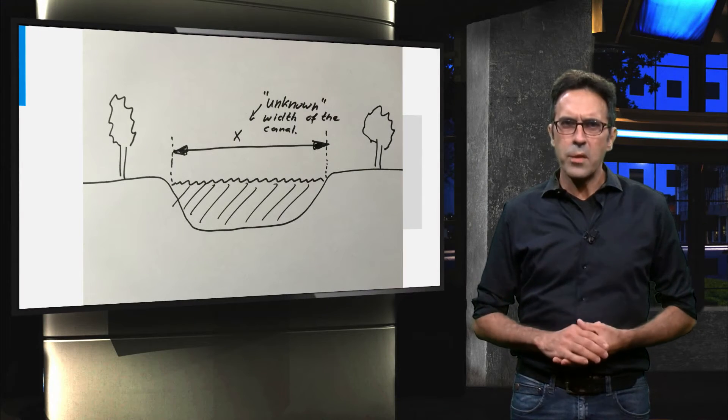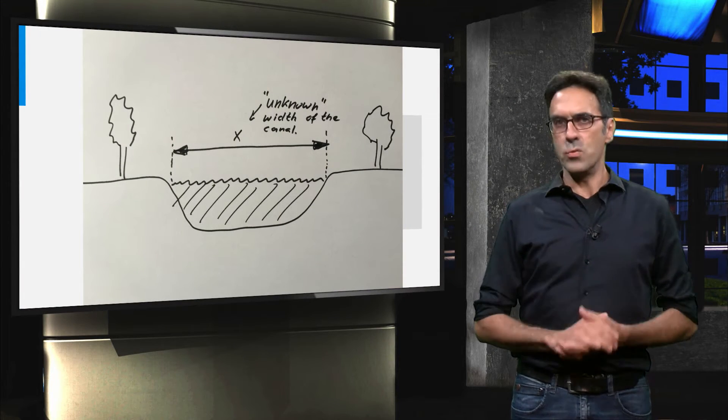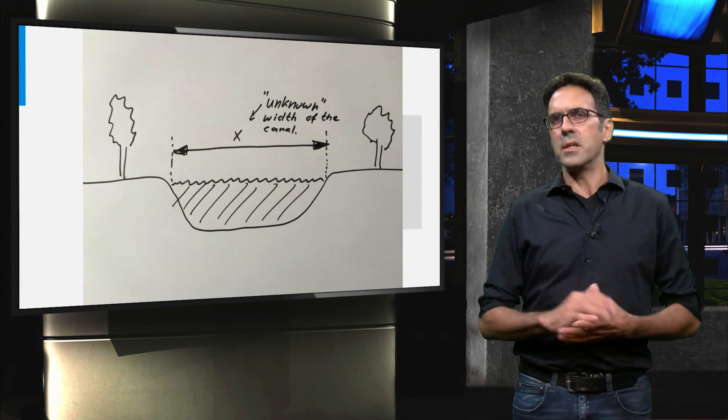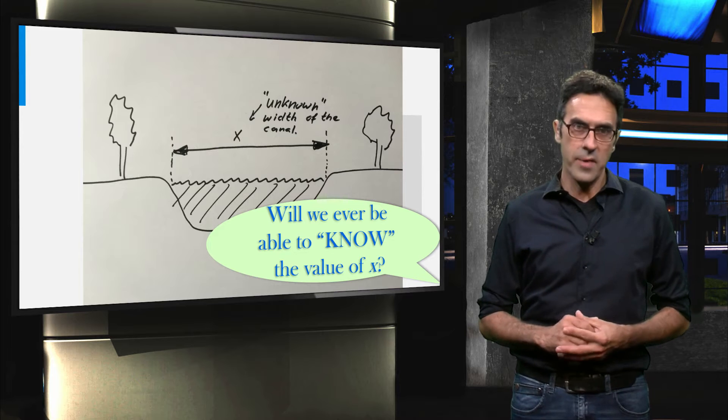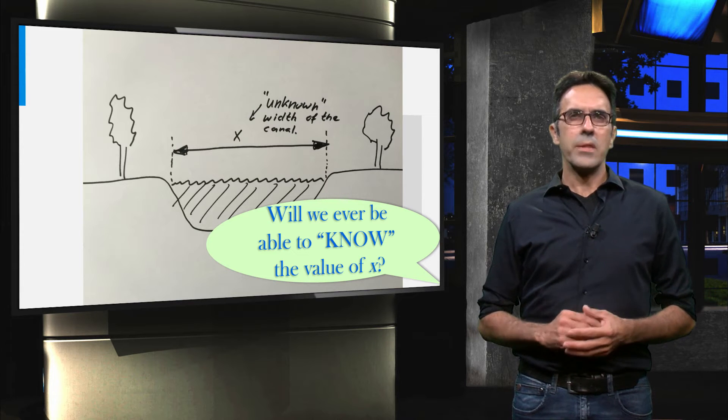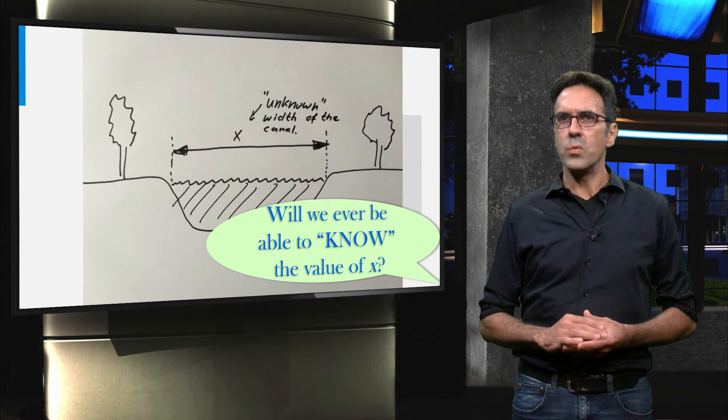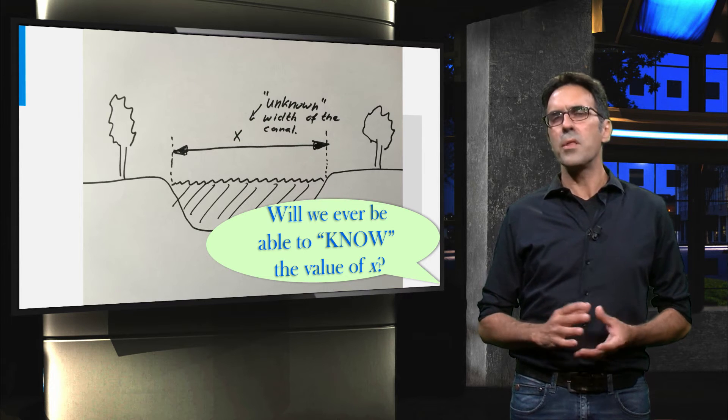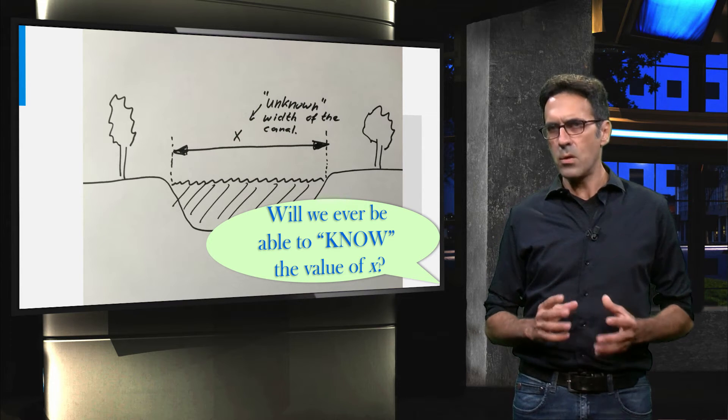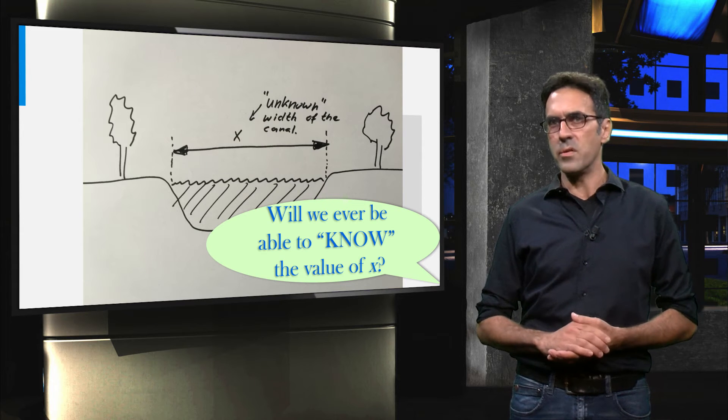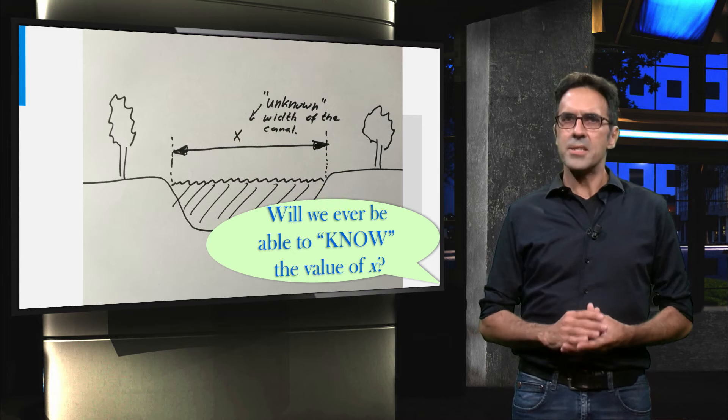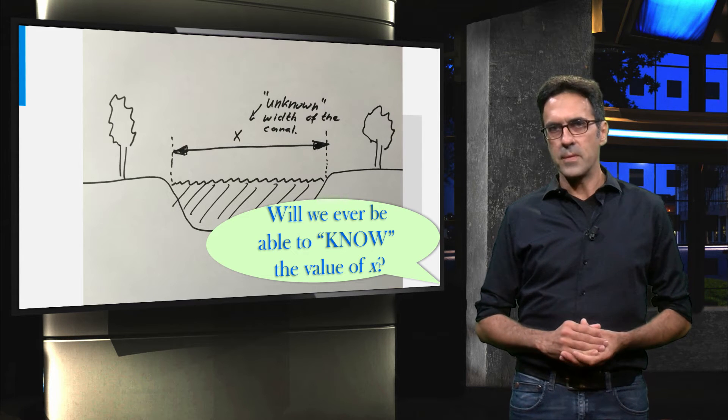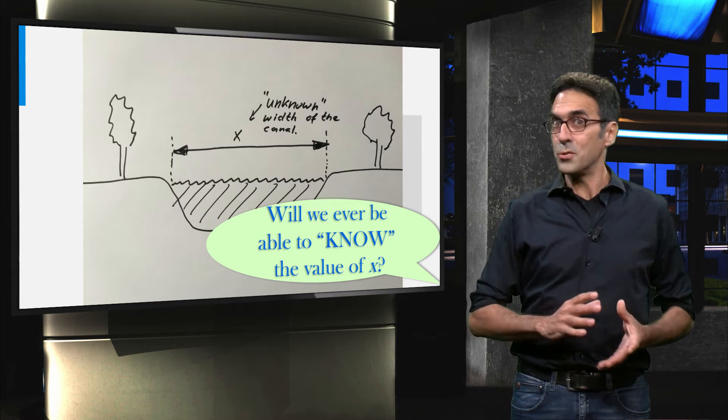So we call the width of the canal X. It is unknown. We could ask ourselves, will we ever be able to truly know the value of X? Well, the answer to this question is no. We will never be able to know that value. The only thing we can do is to try to get close to the true but unknown value of X. What we can do is get an estimate of this unknown parameter and hope that this estimate is close to the truth.